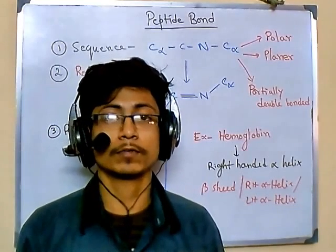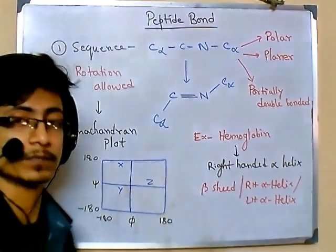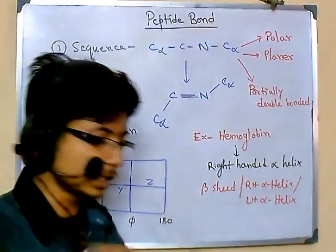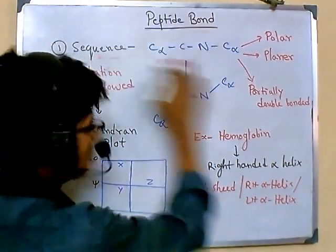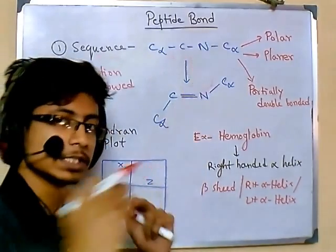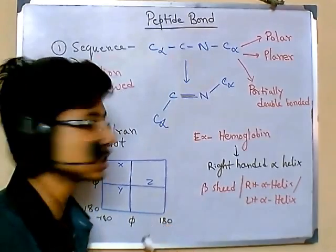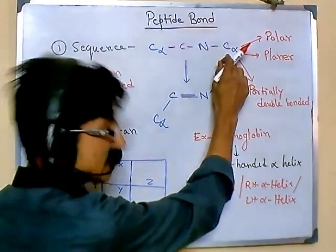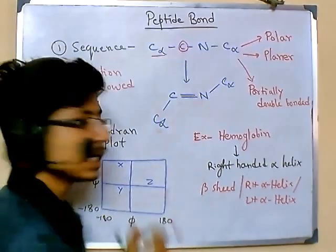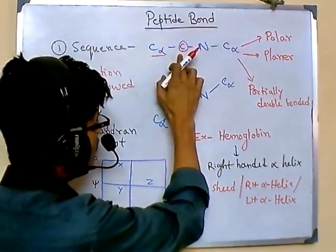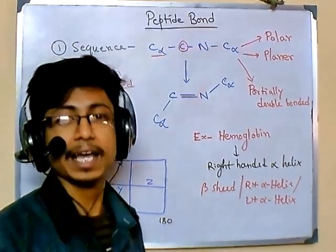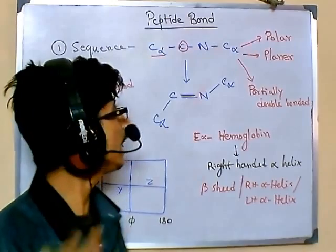CSI Net Module 1 from biochemistry — this is about peptide bonds, which are very important. In a peptide bond, carbon, nitrogen, and other atoms are arranged together to make amino acid structures. The sequence is C, Cα, N, and Cα — so the arrangement in a peptide bond is Cα–C–N and then again Cα.